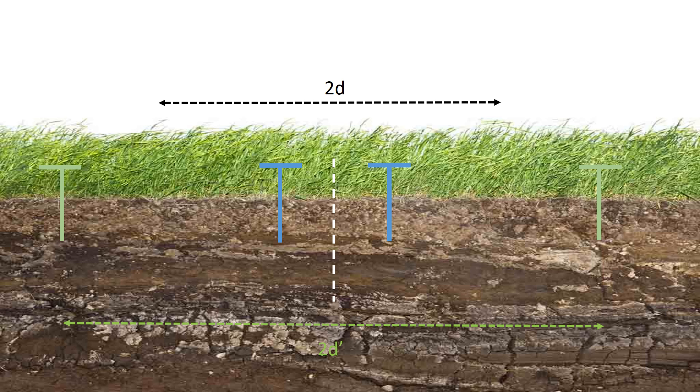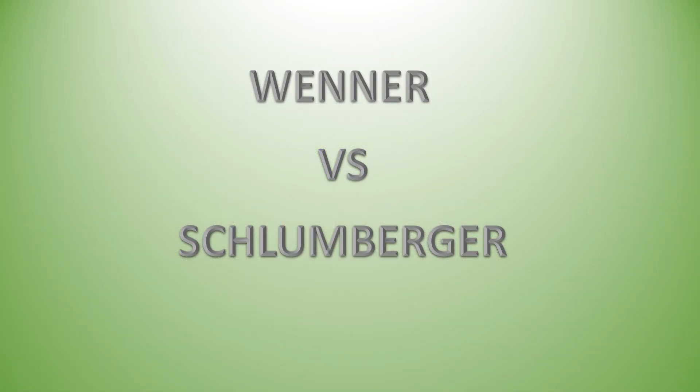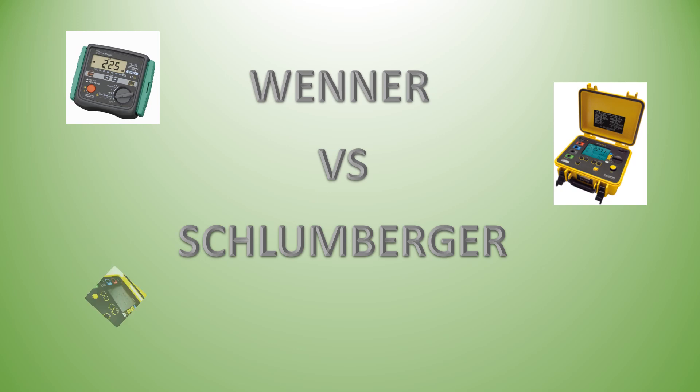Whereas all four electrodes need to be moved at the same time with the Wenner method. Although the Schlumberger method saves time, the Wenner method is better known and more widely used. The mathematical formula necessary is also much simpler. Nevertheless, many measurement instruments include both formulas for instant calculation of the resistivity values with either method.